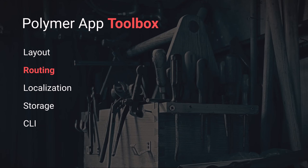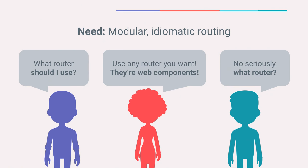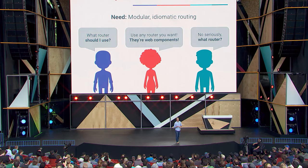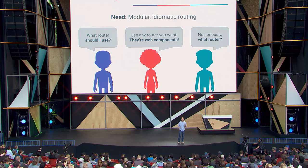We can layout our application. What if we want multiple views? How do we route between multiple views? This is a very common question: what router should I use? We've always said they're just web components — use whatever router you want. But we surveyed the router space and realized that most JavaScript routers have this singular global view of the world — all the different routes and their corresponding views. We wanted to build a router that didn't just work with web components, but that worked like web components — modular and composable, routing from an entire application all the way down to a single component. So we built the app route component.